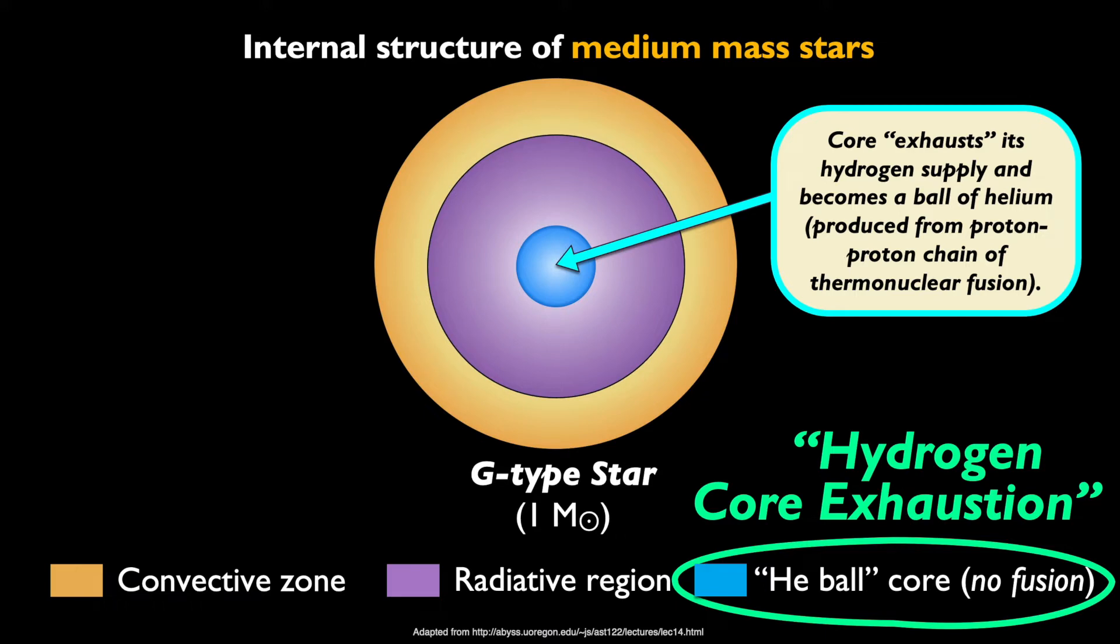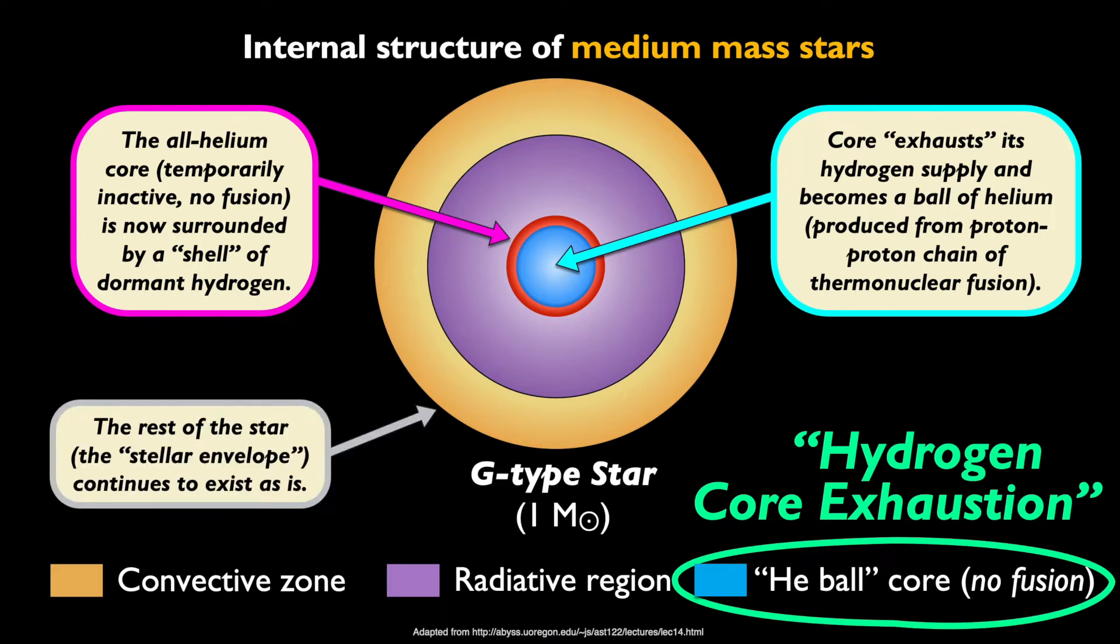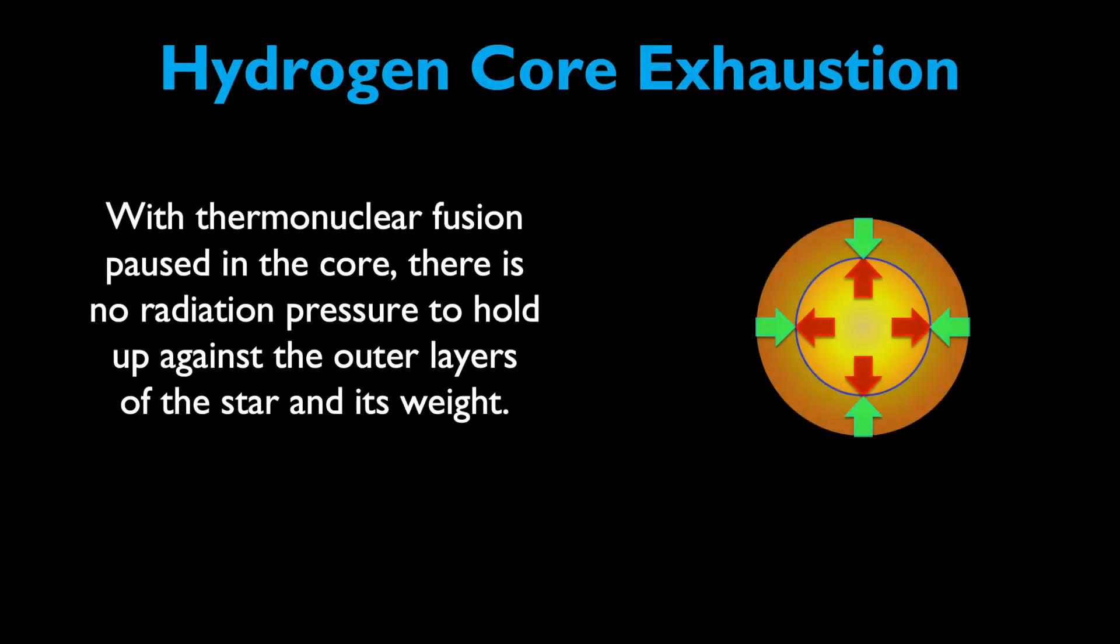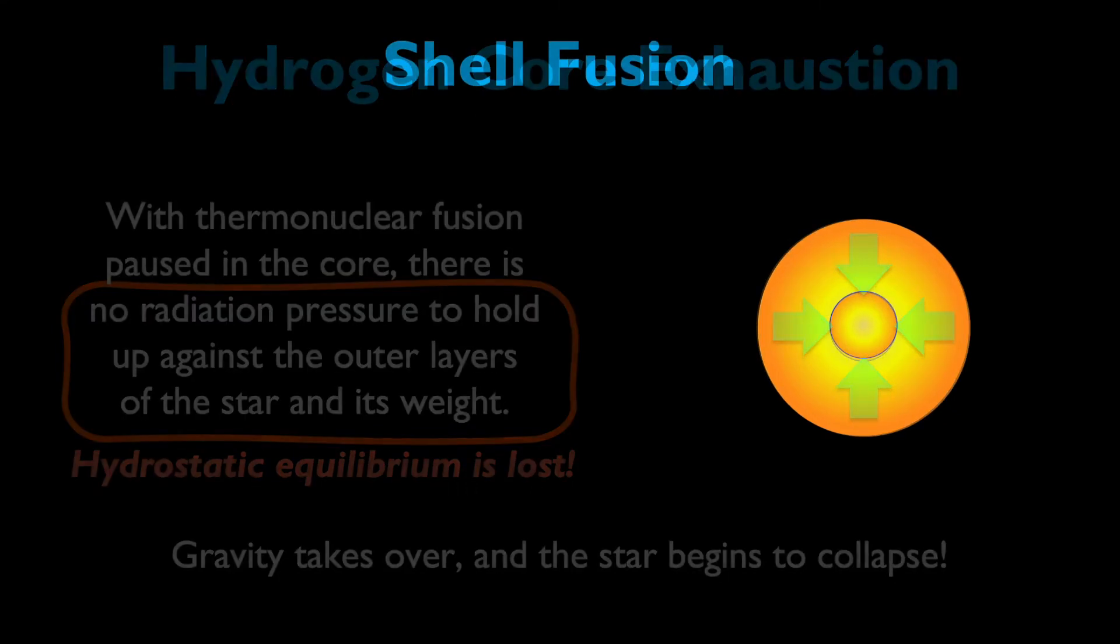The now-all-helium core, which is temporarily inactive and has no fusion occurring inside, is surrounded by a shell of dormant hydrogen. The rest of the stellar envelope, of hydrogen mostly, continues to exist as is. Now that thermonuclear fusion is paused in the core, there is no radiation pressure pushing outwards to hold up against the outer layers of the star and its weight. With that, hydrostatic equilibrium is lost. As gravity takes over, the star begins to collapse.